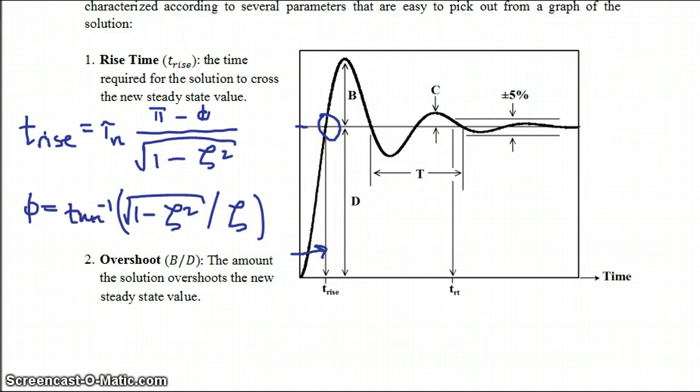The second one is overshoot. Overshoot is the ratio of b over d, these two distances. And the overshoot gives you an estimation of how far your solution overshoots your new steady state value. And it's normalized by how far it had to go to that steady state value from its original steady state.